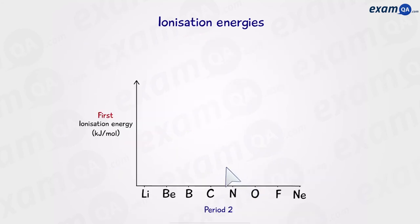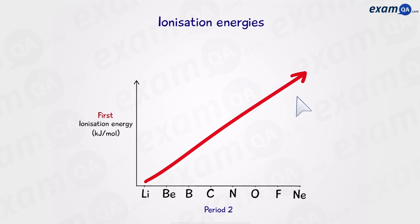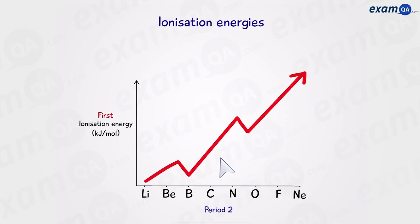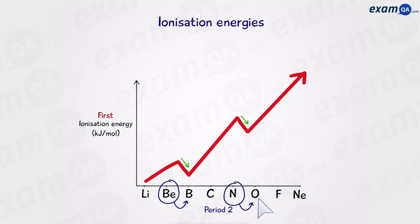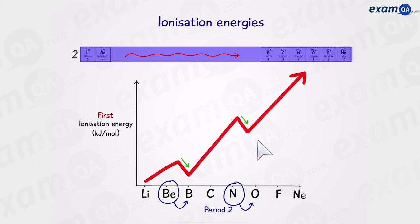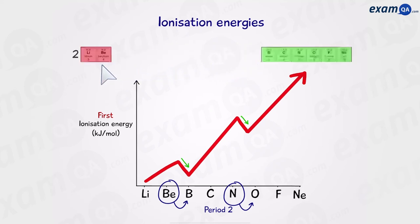This general trend can be represented in a diagram. As we go across a period, the first ionization energy increases, but it's not completely linear. We can see that there's a drop from beryllium to boron — from group 2 to group 3 — and it drops again from nitrogen to oxygen, or group 5 to group 6. We can split the elements into the S block — lithium and beryllium — and the P block for the rest. We're going to use this to explain why there are two drops in the ionization energy across a period.